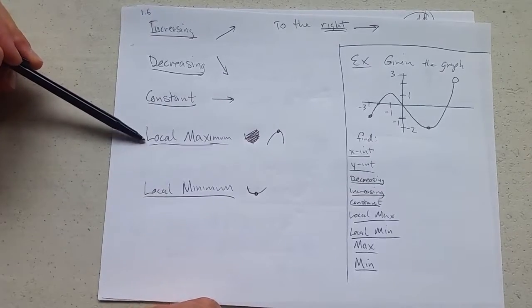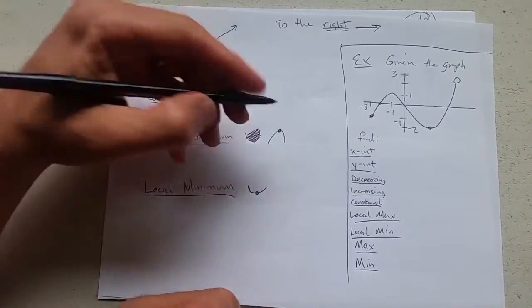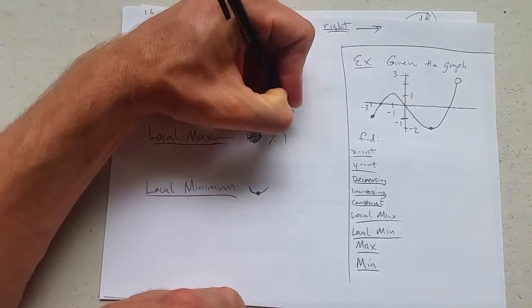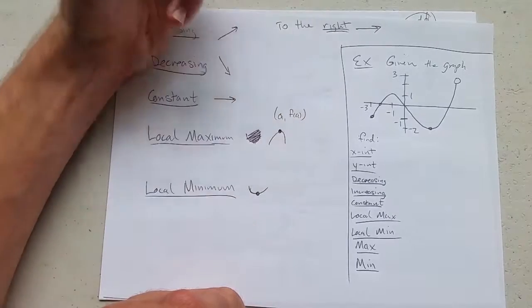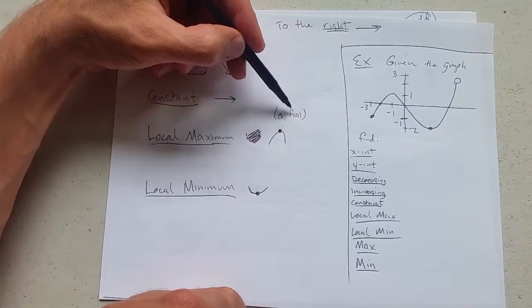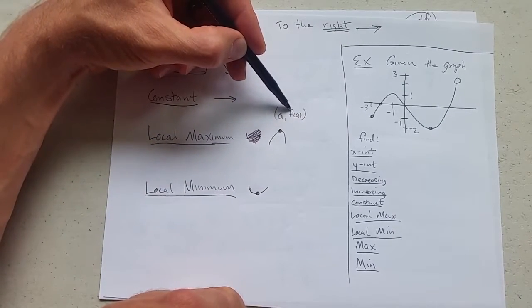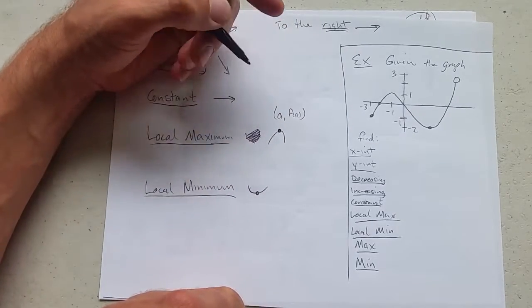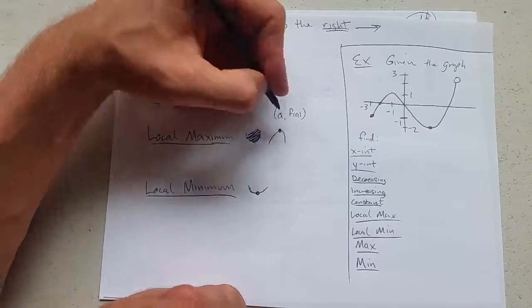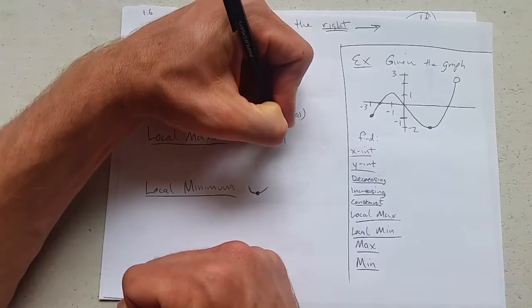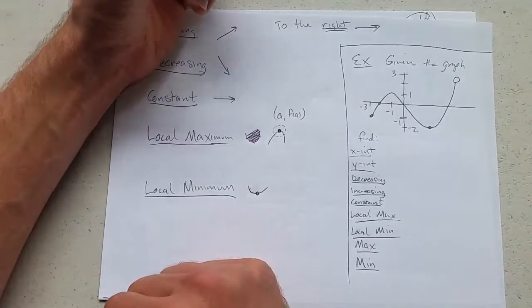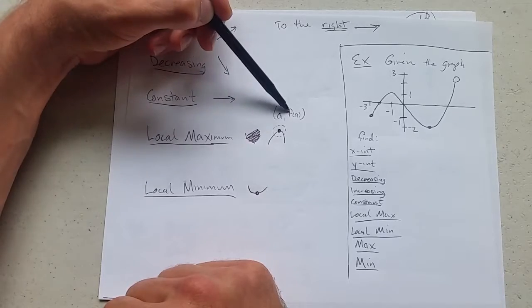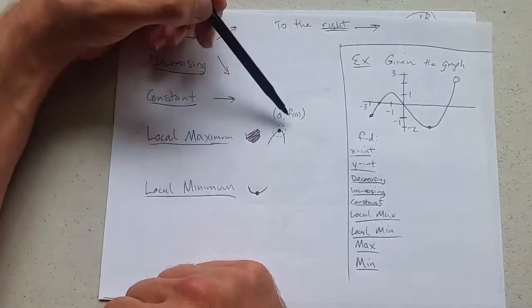Local maximum, what that means is there's a point in the graph such that the y value here, so if this was a comma f of a, this would be a maximum if f of a, this y value is bigger than all the y values close by. Not all the y values overall, but all the ones that are close. So if you think about making a neighborhood around here, just a little tiny circle, every y value on the graph in here is less than or equal to this y value. So we got the biggest one.